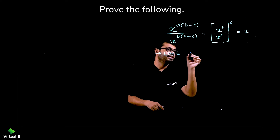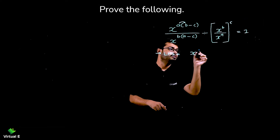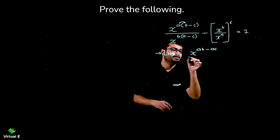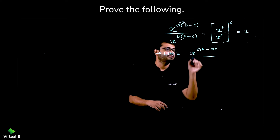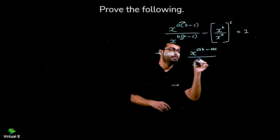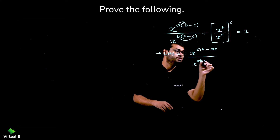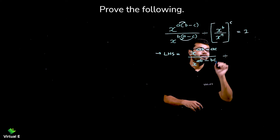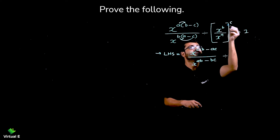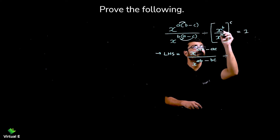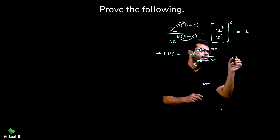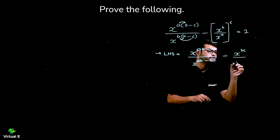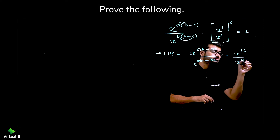So here we can write X raise to AB minus AC. And in this we can write X raise to AB minus BC. Division is over here, so let's keep it as is. And you have this power C outside, so let's bring it inside. Double power means we are going to multiply the power. Here X raise to BC and in the denominator X raise to AC.